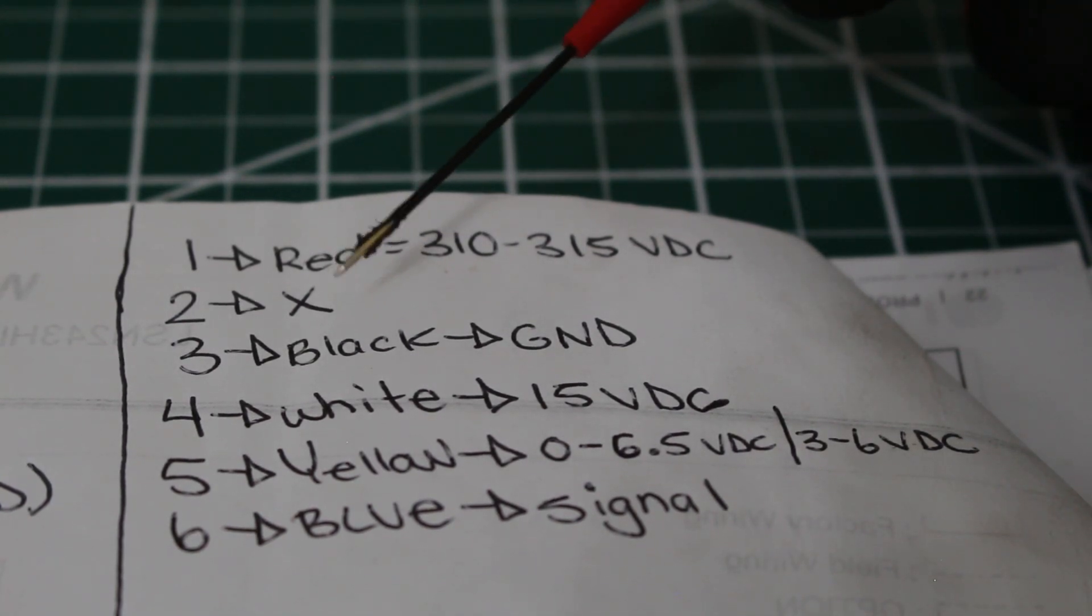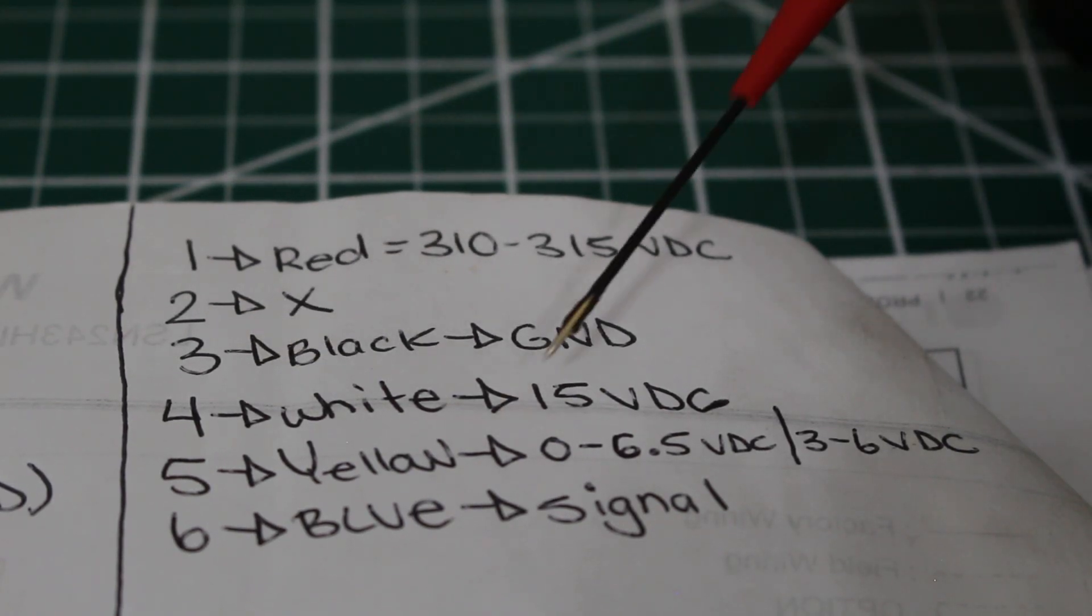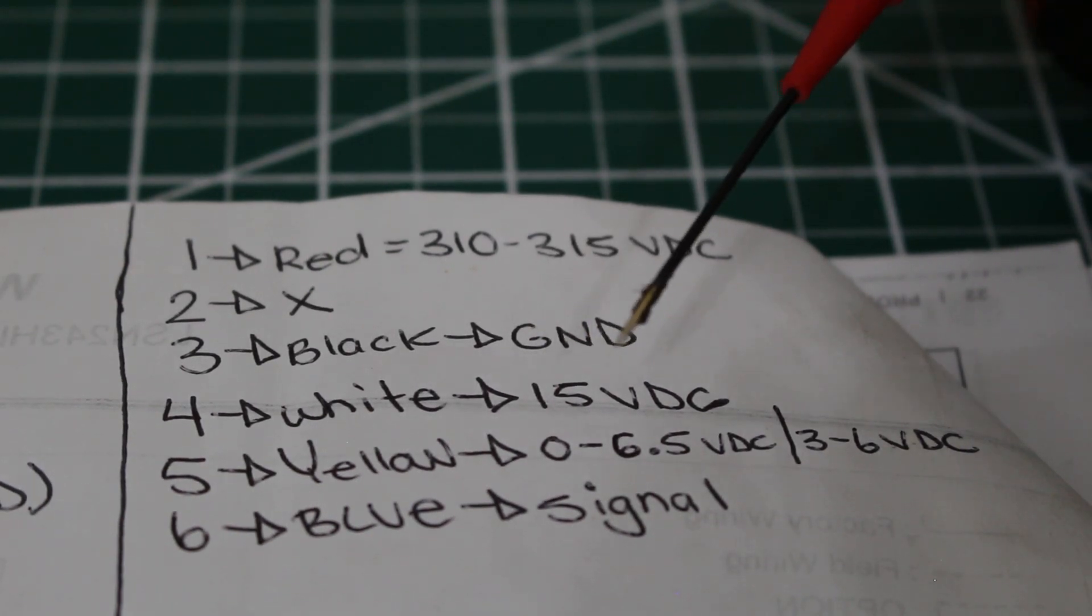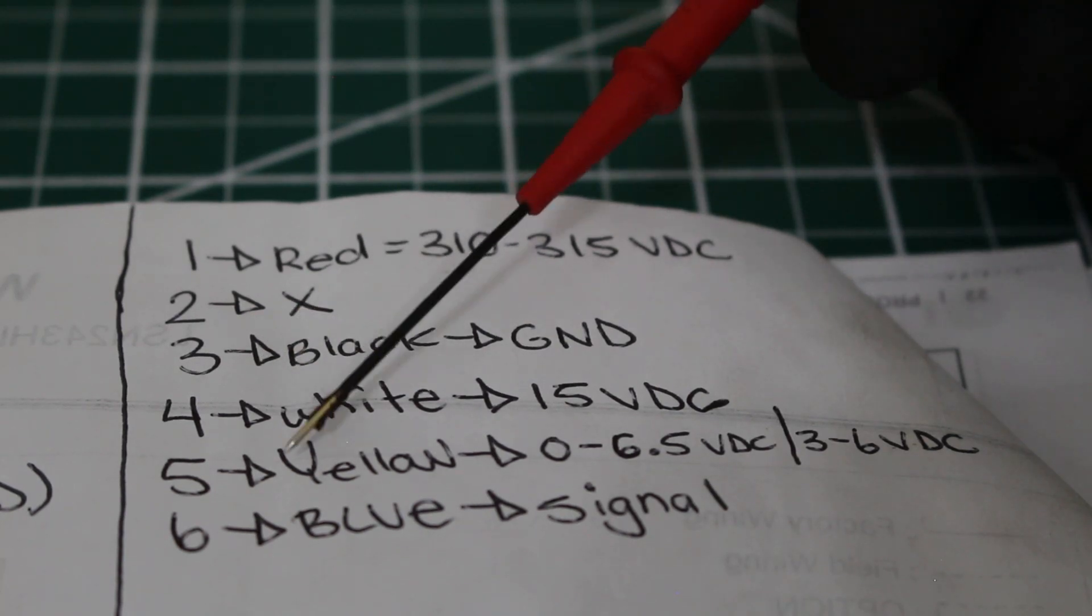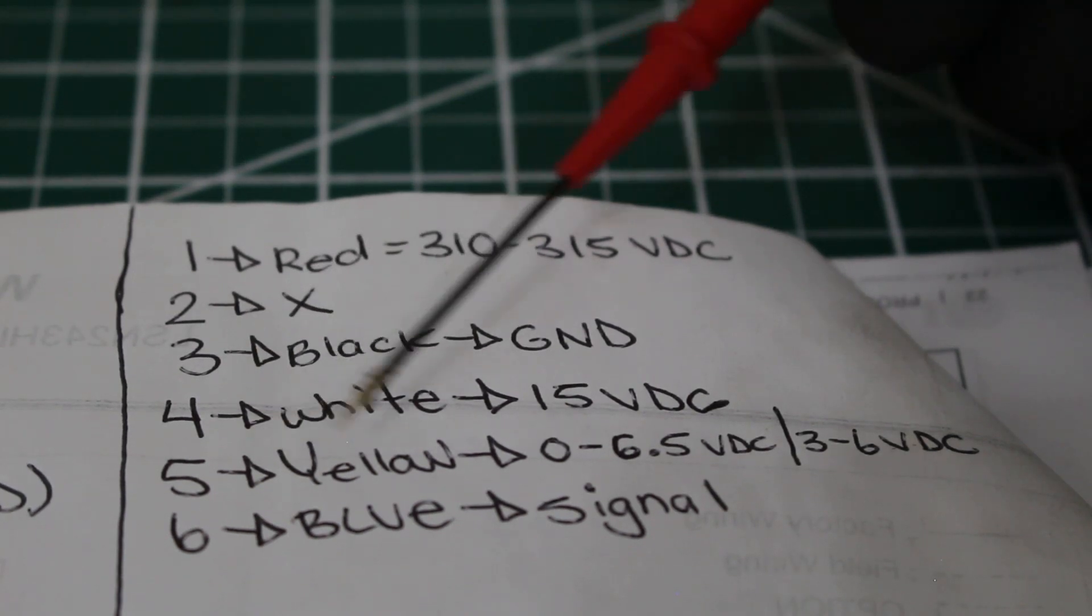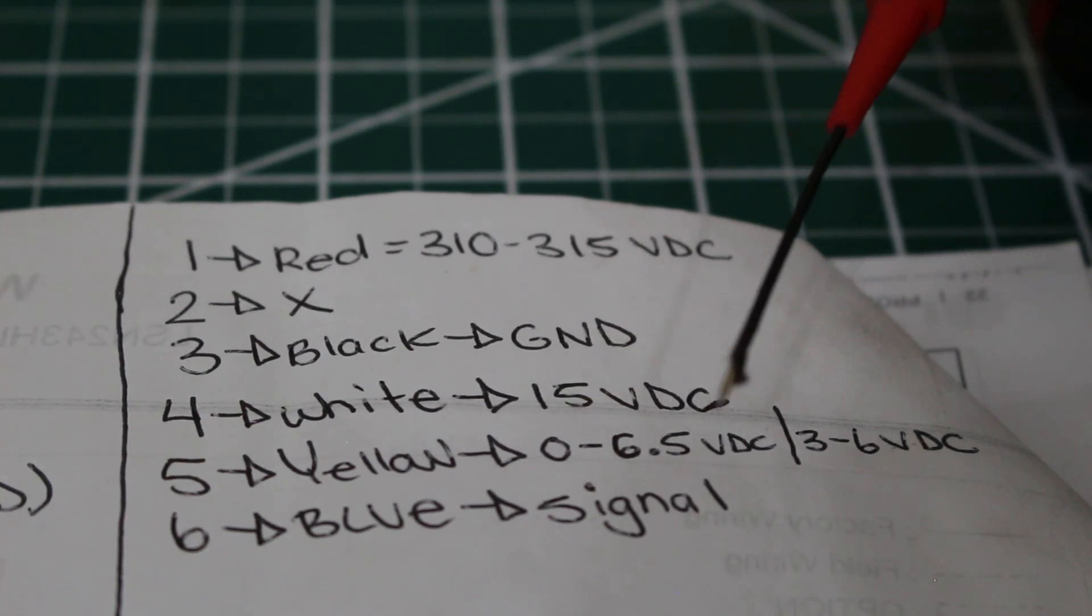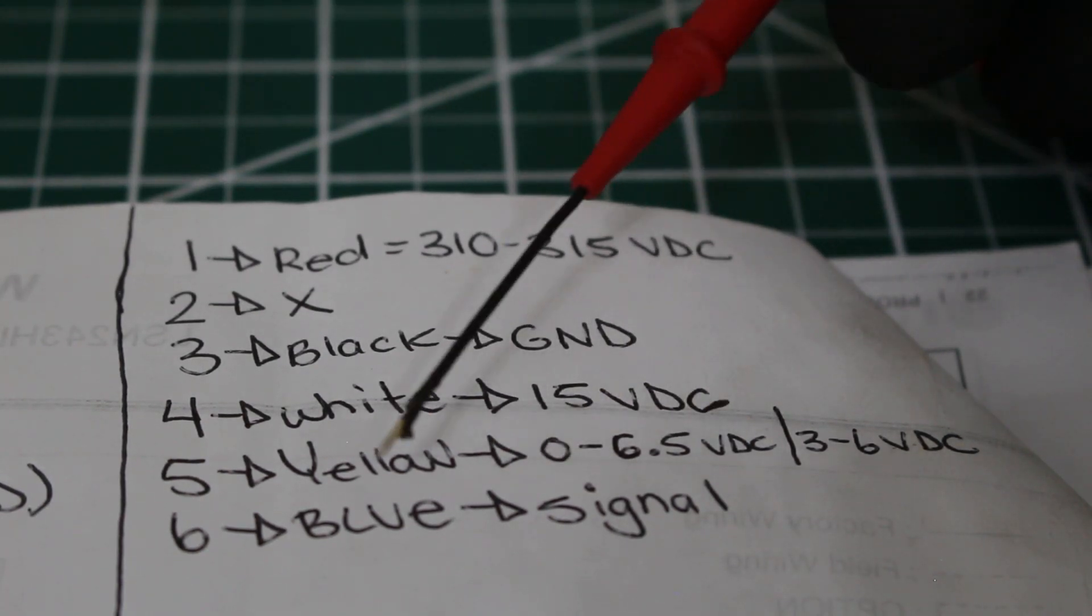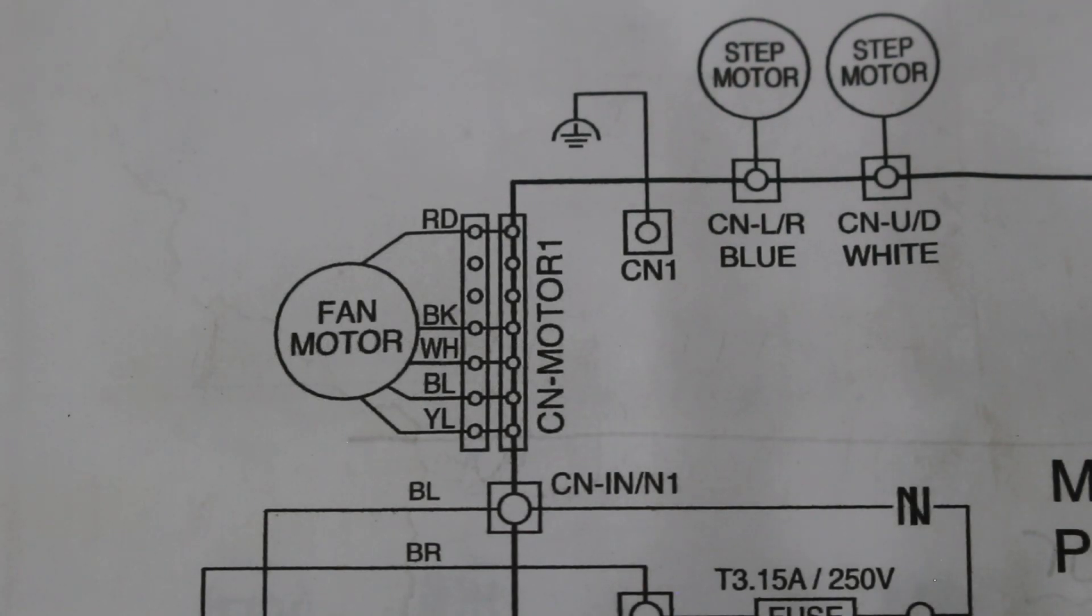Remember, terminal 2, there's nothing there. Then we're going to go from the black wire to 4. So between 3 and 4, you should be measuring around 15 volts DC. Then from black to yellow, 3 to 5, you should be measuring anywhere from 0 to 6.5 VDC. And between black and blue is your signal wire. There is no measurement for the blue wire. This is when you're checking voltage.